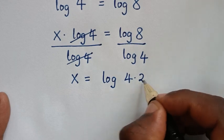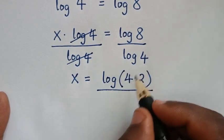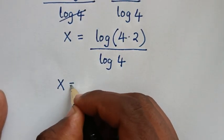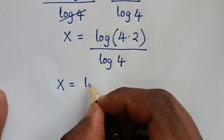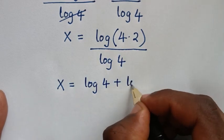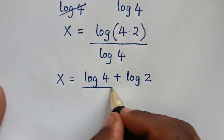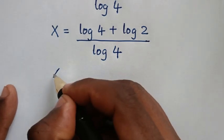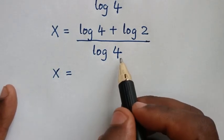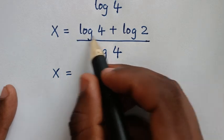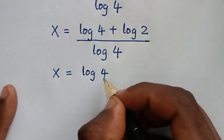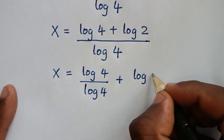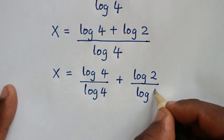Now, 8 is the same as 4 times 2, so x is equal to log of 4 times 2 over log of 4. This expands as log of 4 plus log of 2, all over log of 4. We'll then divide each part by log of 4, giving log of 4 over log of 4 plus log of 2 over log of 4.